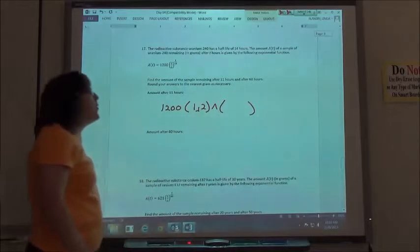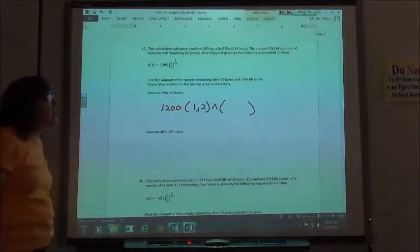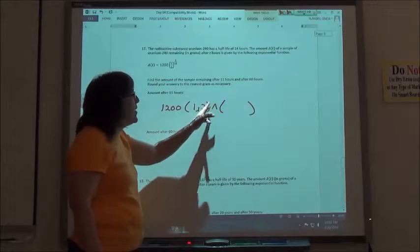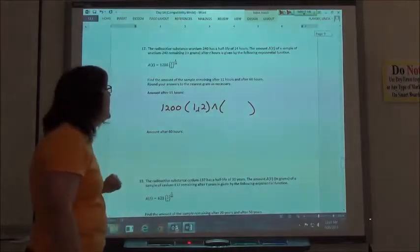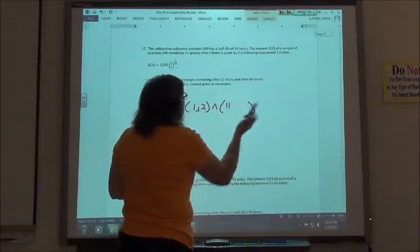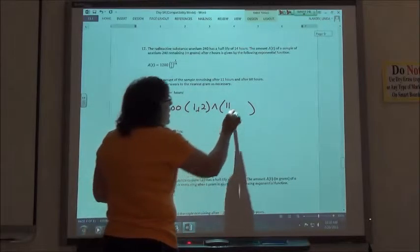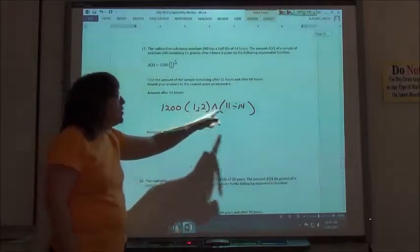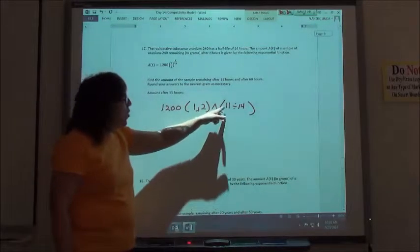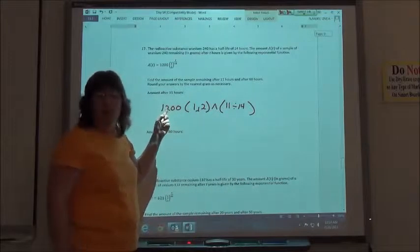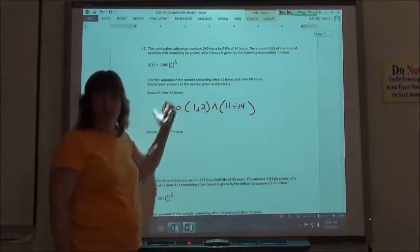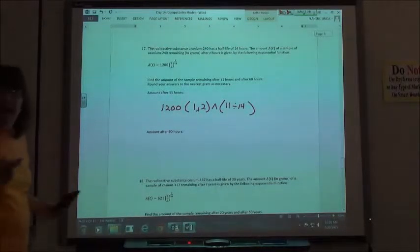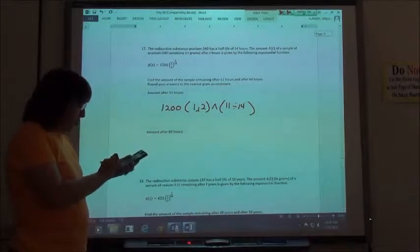14 fourteenths is the same thing as one half-life. In this case, we're going to do 11 hours and 60 hours. So we're going to do 1,200, one-half, to the, and here's where we have to be careful on the calculator. We have to put parentheses around that fraction, because otherwise, it would do the to-the-power and then divide. Following the order of operations, we do exponents before dividing. So we're going to do 11 fourteenths, and you can either use the fraction button, or if it's easier, the division button. Either one works, the fraction or division.